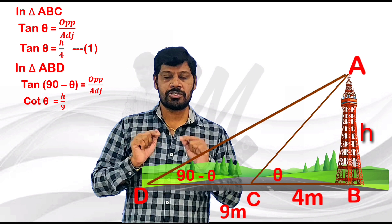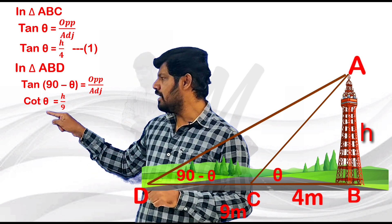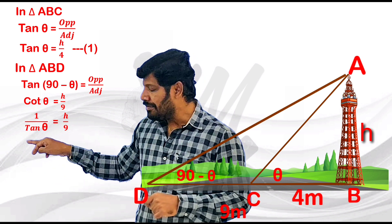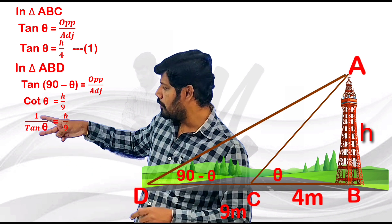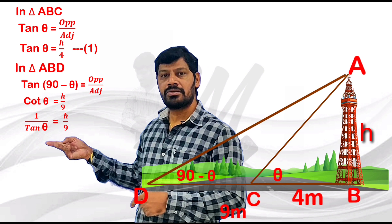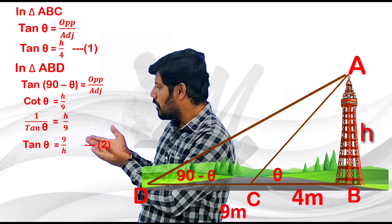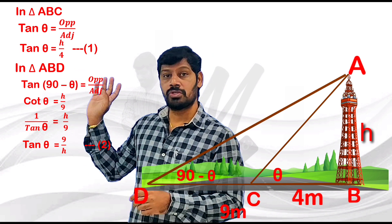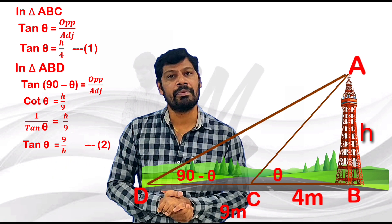In the cot theta place, cot theta equals 1 by tan theta. So 1 by tan theta equals H by 9. From Equation 1, tan theta equals H by 4. Substituting: 1 divided by (H/4) equals H by 9, which gives 9 by H equals H by 9. Wait — we write H by 4 equals 9 by H.